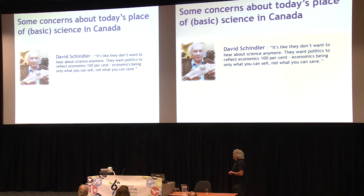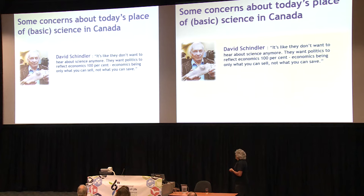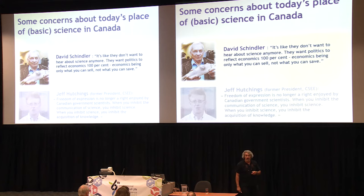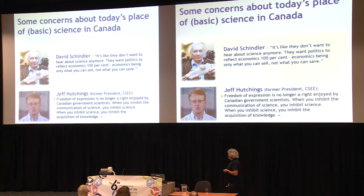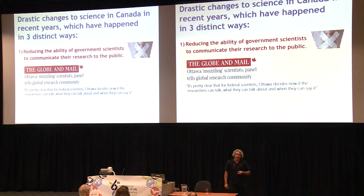Famous scientists in Canada expressed their concern as well. David Schindler, one of them — an icon and a legend of aquatic biology in Canada — to quote him: 'It's like they don't want to hear about science anymore; they want politics to reflect economics 100%, economics being only what you can sell, not what you can save.' Former President of the Canadian Society of Ecology and Evolution, Jeff Hutchings, also expressed his concern, saying that freedom of expression is no longer a right enjoyed by Canadian government scientists: 'When you inhibit communication in science, you inhibit science. When you inhibit science, you inhibit acquisition of knowledge.' There have been drastic changes to science in Canada in recent years, happening in three distinct strategic ways. The first: reducing the ability of government scientists to communicate their research to the public.